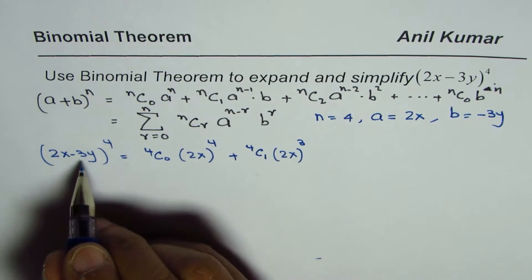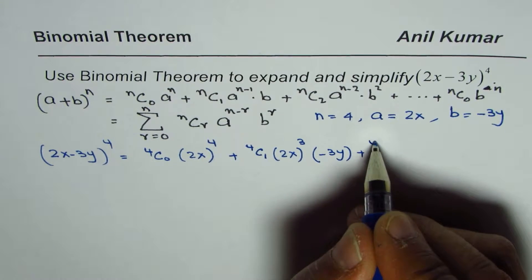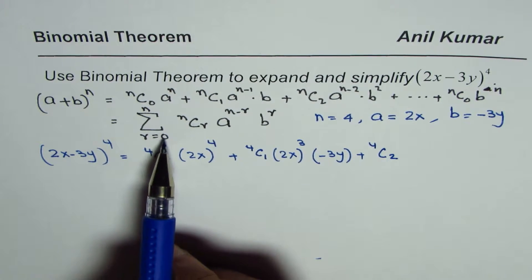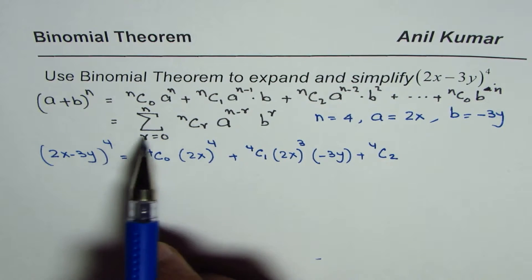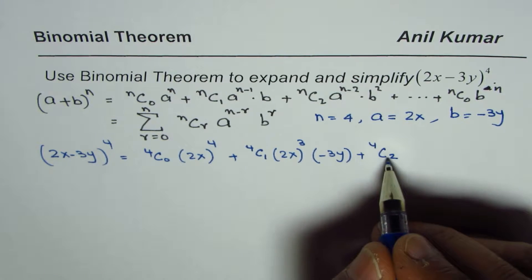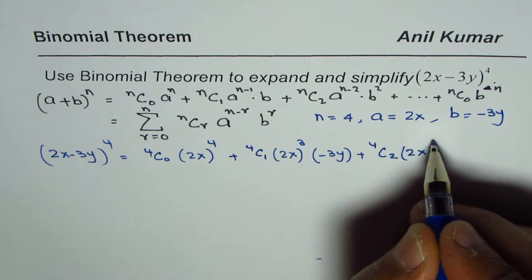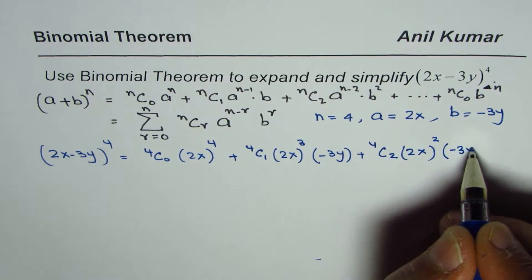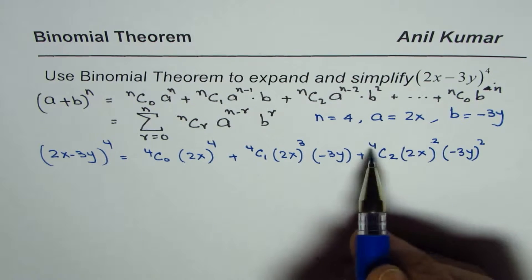From 4 it becomes 3 and b will be minus 3y plus 4C2. This r value increases from 0 to n. So we will have in this case five terms, one more than n. So we have 4C2 a is 2x. Power of a is decreasing, it becomes square and power of b increases. So minus 3y square. Whenever you add these exponents, it will always be 4.